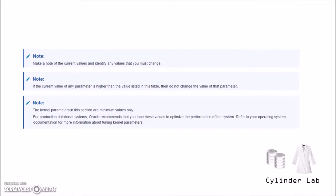Kernel parameters. A couple of notes before we get started. What we're going to do is review some kernel parameters and determine if any need to be changed. If the current value of a parameter is higher than what Oracle is suggesting for the minimum value, then we're not going to change it. Also worth noting is that these kernel parameters are minimum values only, and for a production system they will likely need to be tweaked.